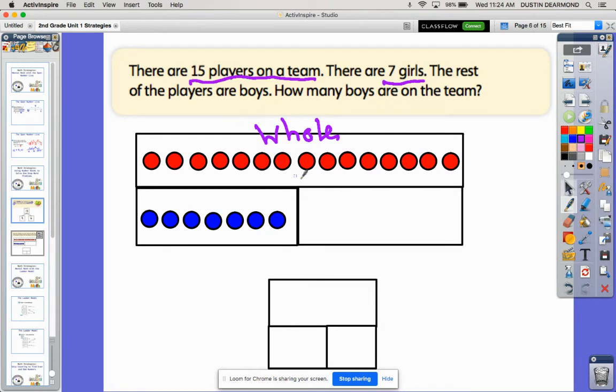Then all we have to do is figure out what's left: 1, 2, 3, 4, 5, 6, 7, 8. So I can draw 1, 2, 3, 4, 5, 6, 7, 8 boys.